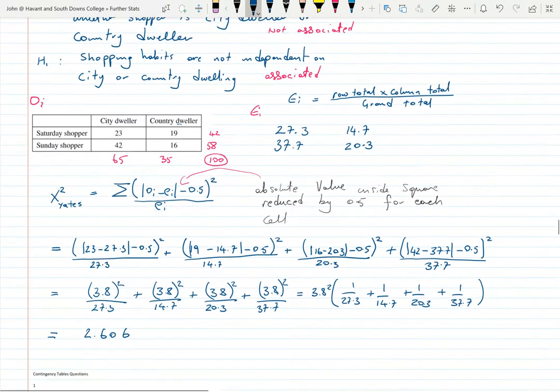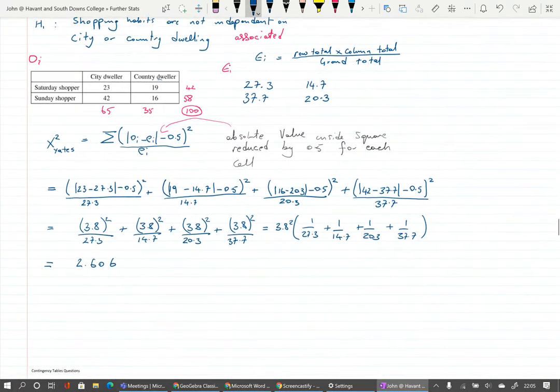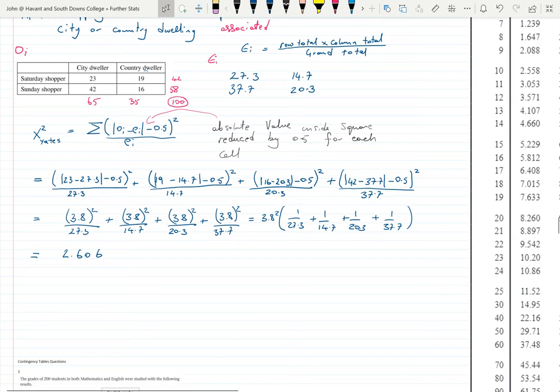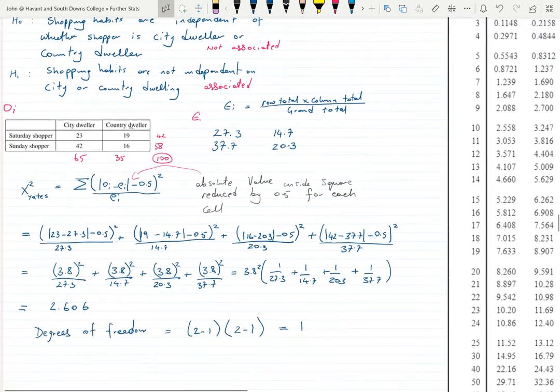Then we can do our hypothesis test and look for our tables. The degrees of freedom is obviously one because we've got a two by two table. There's one degree of freedom because it's two minus one times two minus one and that equals one. We need to look for our test at a 10% significance level.